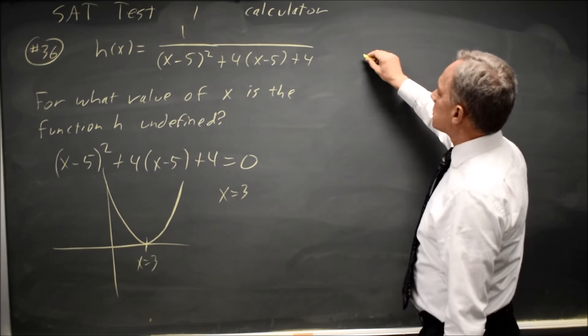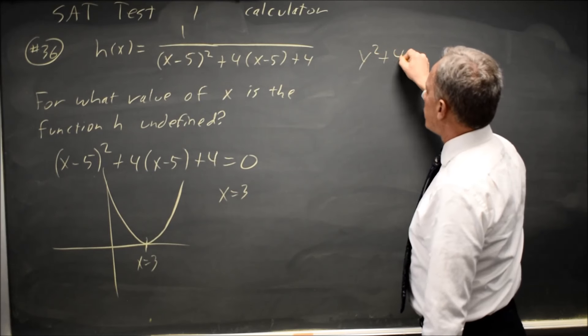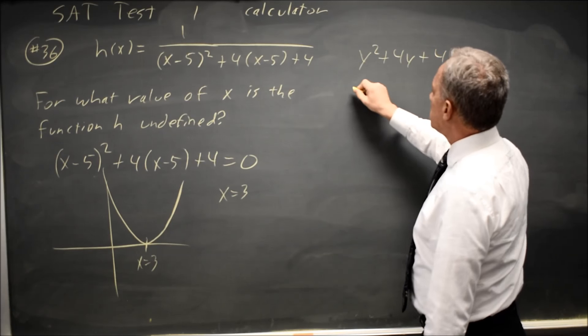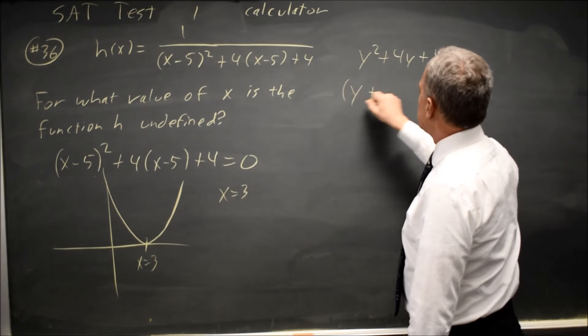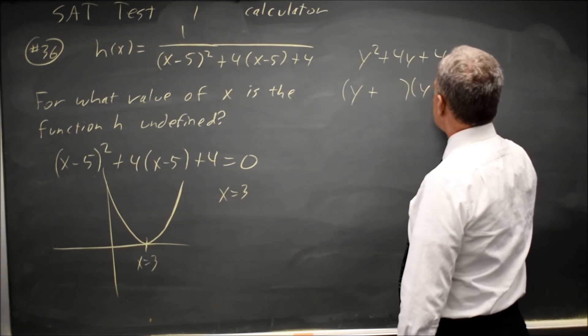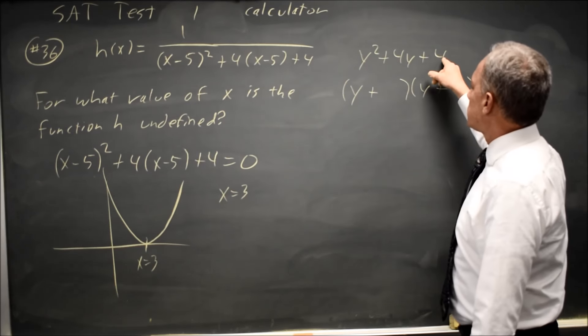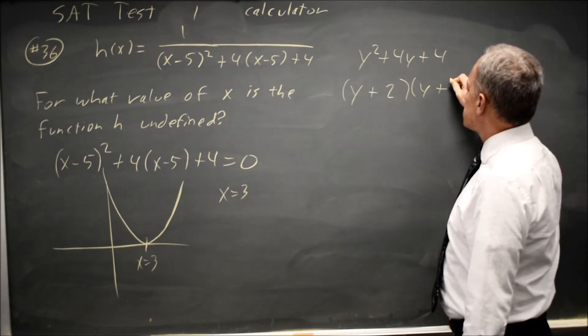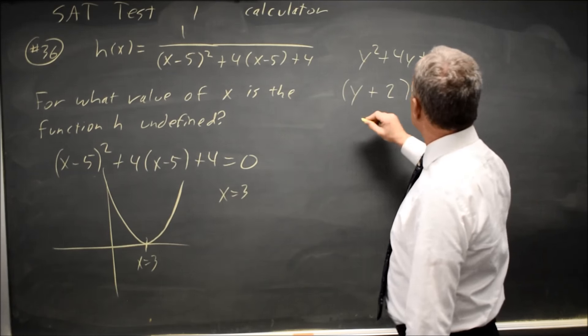If I think of this as y² + 4y + 4, that factors as (y + )(y + ). I need two numbers whose product is 4 and sum is 4. So that's 2 and 2.